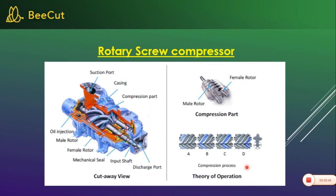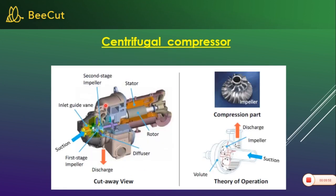Image of the rotary screw type — showing both single screw and twin screw. Parts include: suction inlet, compression pack, oil injector, male rotor, female rotor, mechanical sealing, and discharge port. The rotary screw compressor is a central, high-capacity compressor. This is the film picture overview of it.